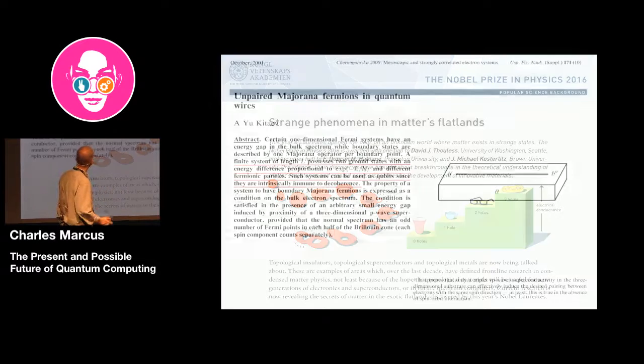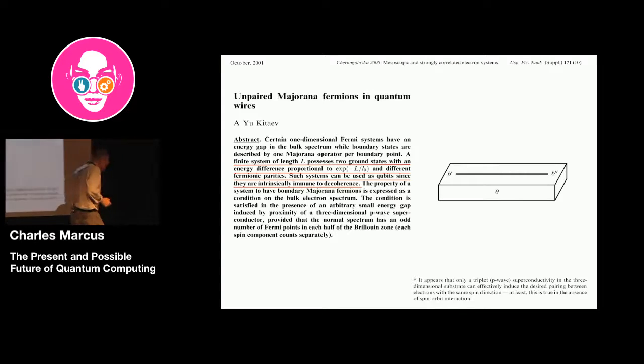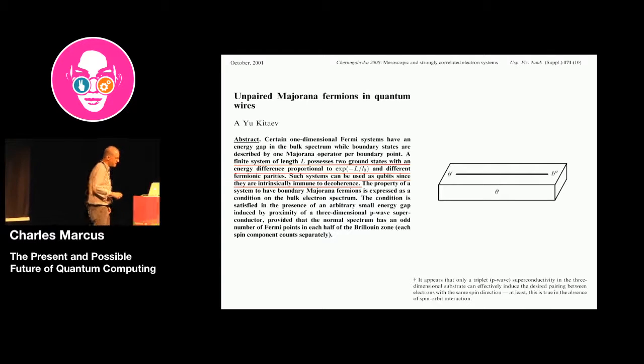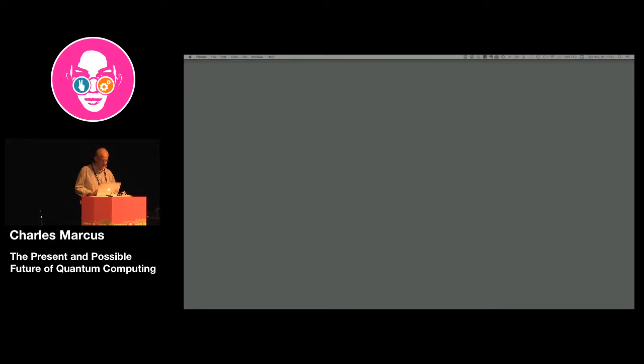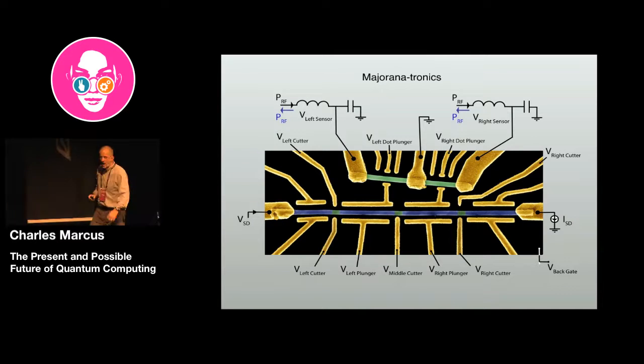And it's interesting if you read the citation on the Nobel website, it says topological insulators, topological superconductors, topological metals are now being talked about. These are examples of areas which over the last decade have defined the front line of research in condensed matter physics, not least because of the hope that topological materials will be useful for new generation of electronics and superconductors or in future quantum computers. So what's that all about? How do we compute with them? Well, that's what I wanted to end with. I think that for the sake of time, because I'm probably pretty much out of time now, aren't I? Yeah. So then I'm going to skip forward and not tell you the long, interesting, beautiful, fantastic history of these devices, unfortunately, but instead to say that they look like this.